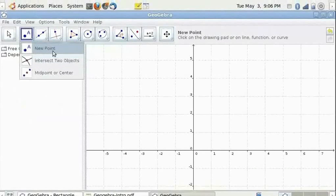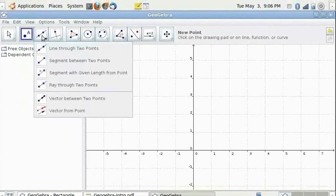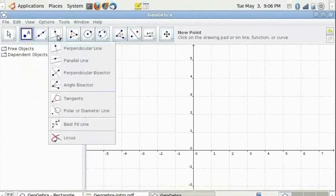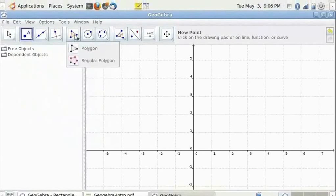Similarly the next set of tool items are for lines and then there is perpendicular lines and bisectors, polygons, circles, etc.